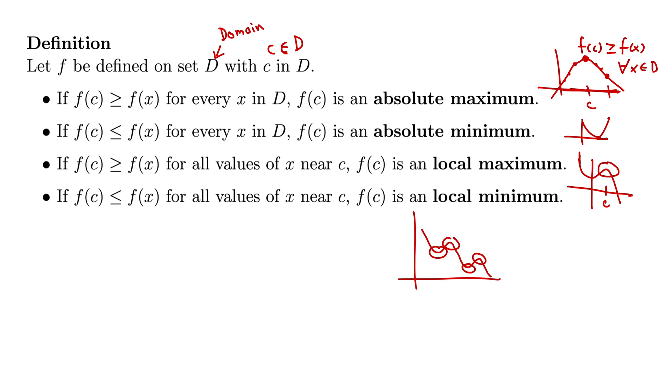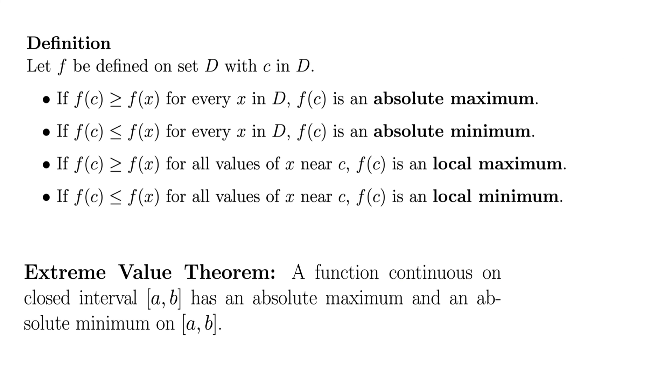Okay, next we have a theorem. Okay, the extreme value theorem tells us that a function continuous on closed interval AB has an absolute maximum and an absolute minimum on that interval AB. And if you don't believe this theorem, just try to draw one that's continuous on a closed interval. That means it's defined on every point on that closed interval that does not have an absolute maximum or minimum. Any function you can draw, let's draw one. Okay, so we're defined everywhere on this interval AB and it's continuous. So, no matter what we do, I don't know, maybe make it sharp, make it curved, whatever we can possibly do.